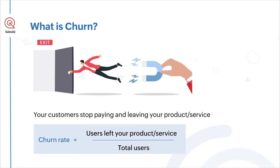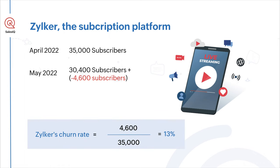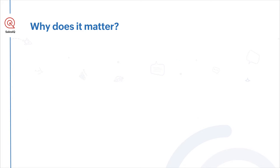Churn rate is the percentage of users who left with the total users you initially had. Let me elaborate with an example. Zilker is a subscription-based streaming platform offering a great variety of movies, TV series, documentaries, and others for education, entertainment, and enlightenment purposes. By April 2022, they had 35,000 subscribers. In May, 4,600 users stopped paying for its subscription. The churn rate for Zilker is 4,600 divided by 35,000, which gives a churn rate of 13%.